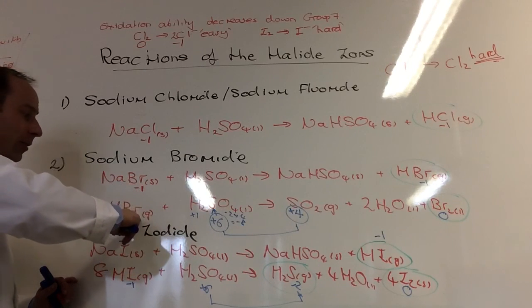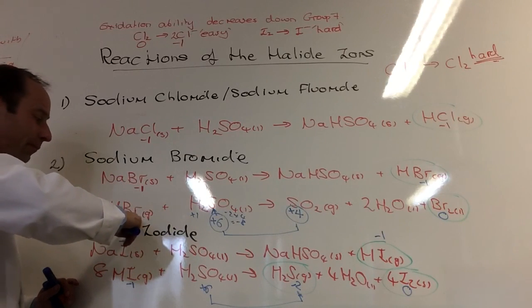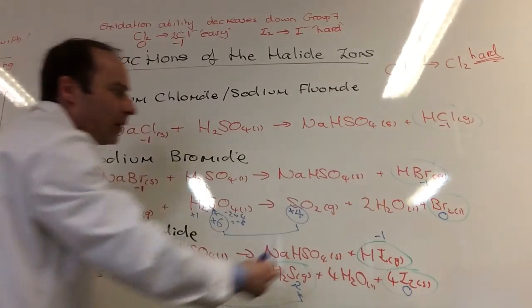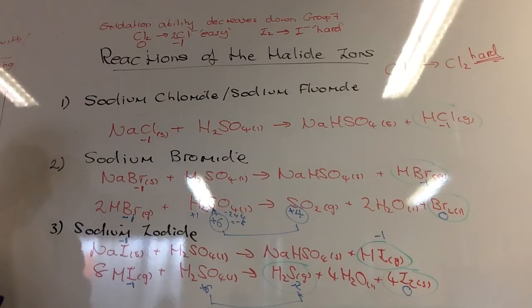For this one, bromine here is losing an electron. So my bromide is losing an electron to become elemental bromine there. So it's a reverse trend in terms of reactivity you need to talk about.